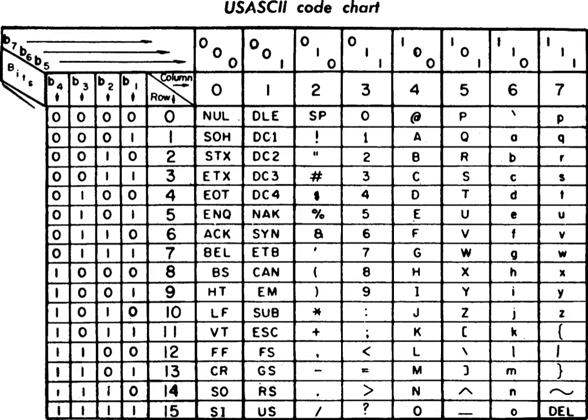Unicode and the ISO/IEC 10646 Universal Character Set have a much wider array of characters, and their various encoding forms have begun to supplant ISO/IEC 8859 and ASCII rapidly in many environments. While ASCII is limited to 128 characters, Unicode and the UCS support more characters by separating the concepts of unique identification using natural numbers called code points and encoding to 8, 16, or 32-bit binary formats, called UTF-8, UTF-16, and UTF-32. ASCII was incorporated into the Unicode character set as the first 128 symbols, so the 7-bit ASCII characters have the same numeric codes in both sets. This allows UTF-8 to be backward compatible with 7-bit ASCII, as a UTF-8 file containing only ASCII characters is identical to an ASCII file containing the same sequence of characters.